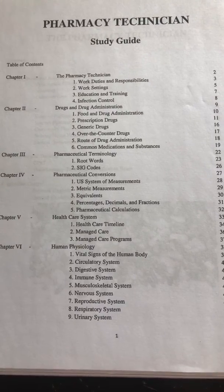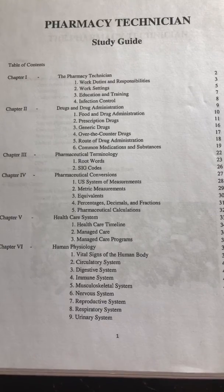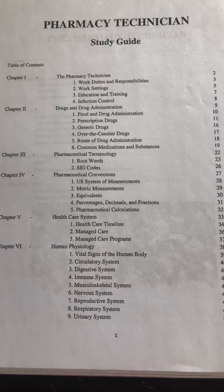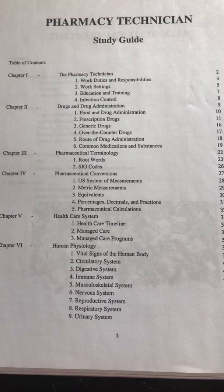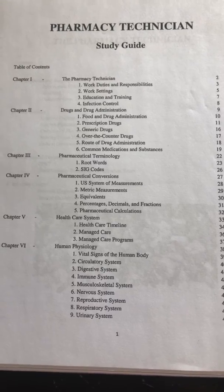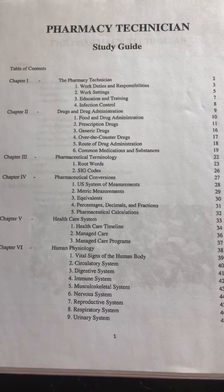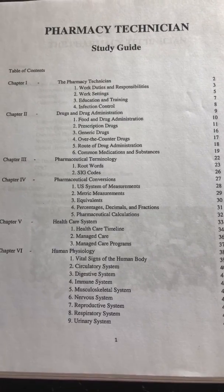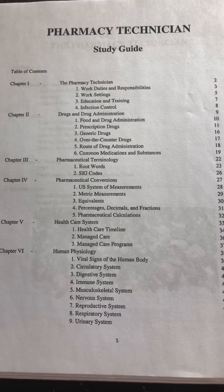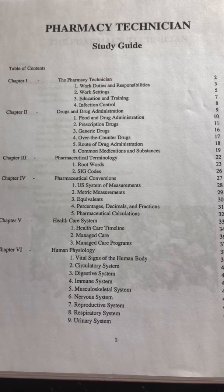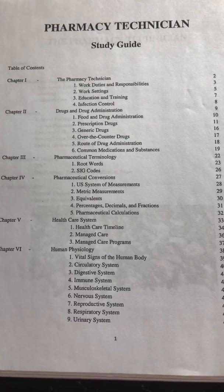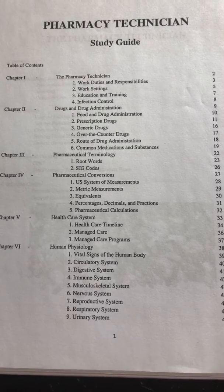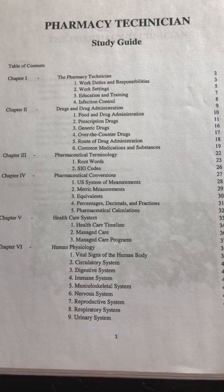Chapter four is pharmaceutical conversions, covering the US system of measurements, metric measurements, equivalents, percentages, decimals, fractions, and pharmaceutical calculations. That's where you have to do a little math for this class to figure out medications. For example, some doctors will order 500 milligrams of something and maybe it comes in five milliliters.